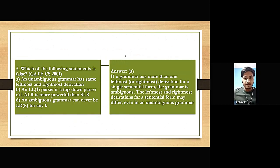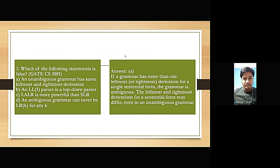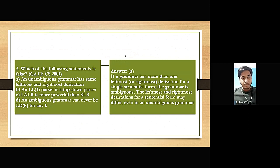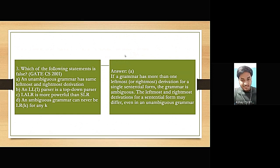Explanation: If a grammar has more than one leftmost or rightmost derivation for a single sentential form, the grammar is ambiguous. However, the leftmost and rightmost derivation for a given sentential form may differ even in an unambiguous grammar, making statement A false.